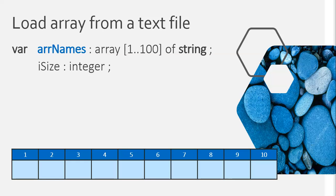So we have an array — it's empty, it's got no values in it. And we are going to set our default size. We must always initialize size to zero. Assume that if your array is empty, you set your size to zero because obviously there's nothing in the array.